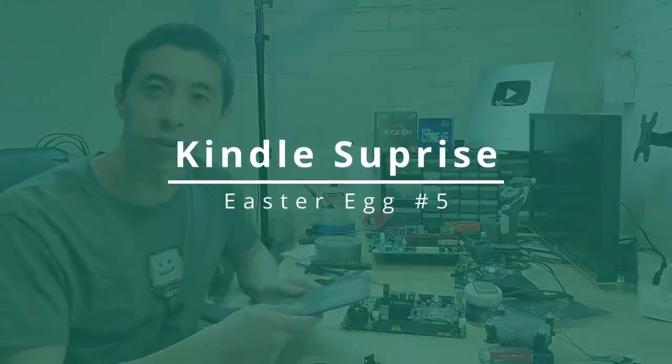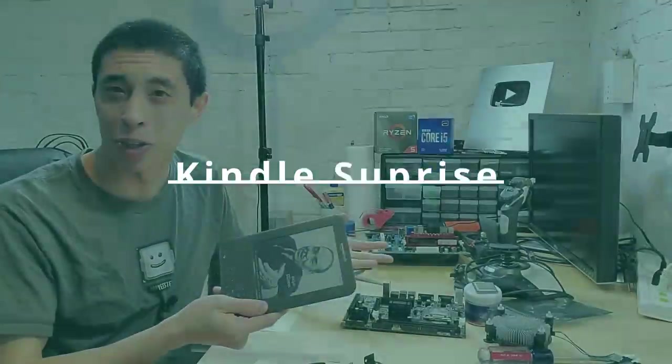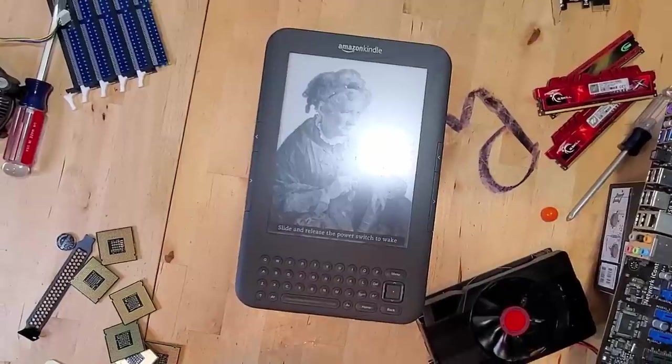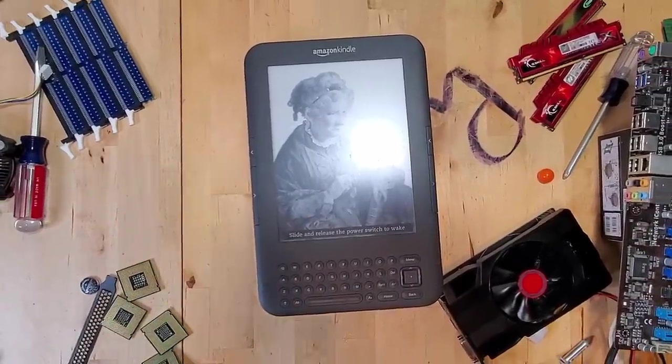And finally, the last Easter egg I have for you today is arguably not a computer component, but I think it's really cool nonetheless. This here is a Kindle, more specifically a Kindle keyboard, which was released in the product's third generation back in 2010. Upon release, it was Amazon's fastest selling Kindle to date. And like a normal Kindle, allowed you to read books and other bodies of text on the e-ink display.